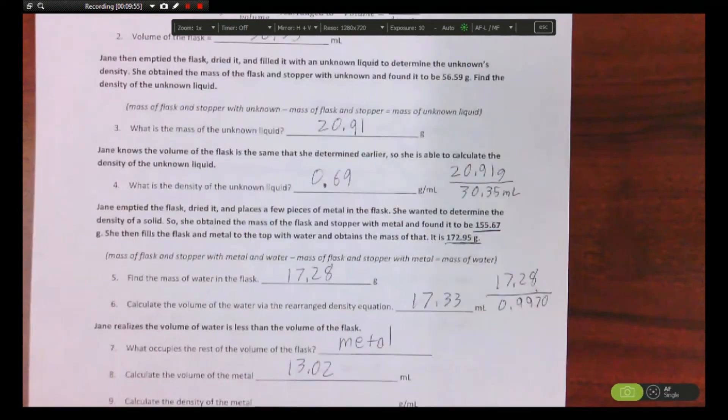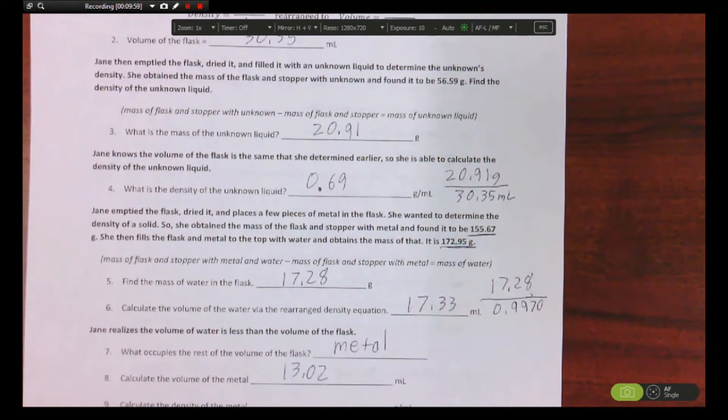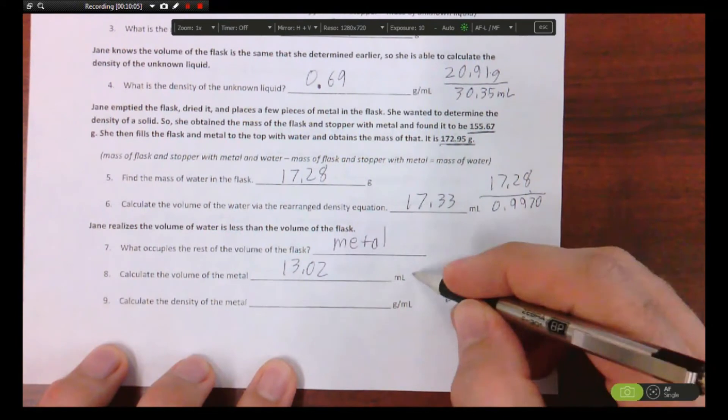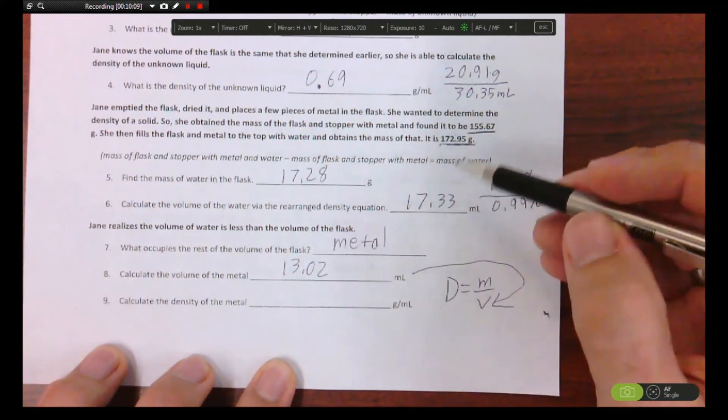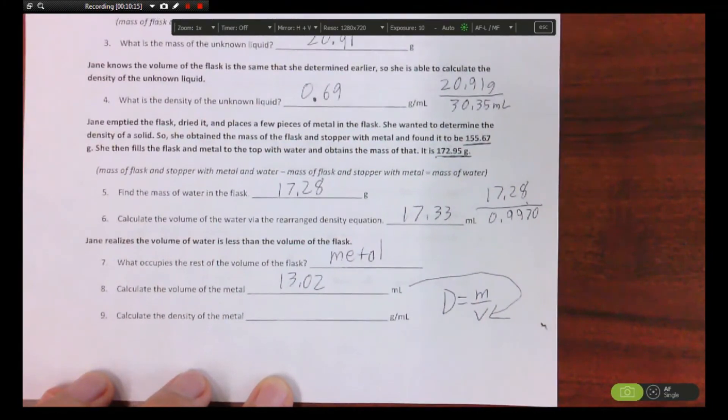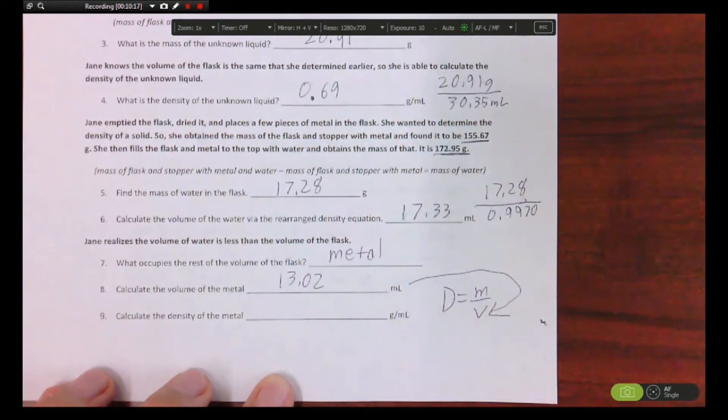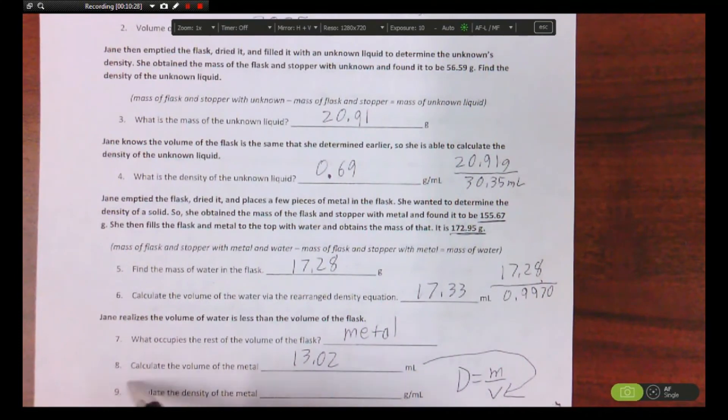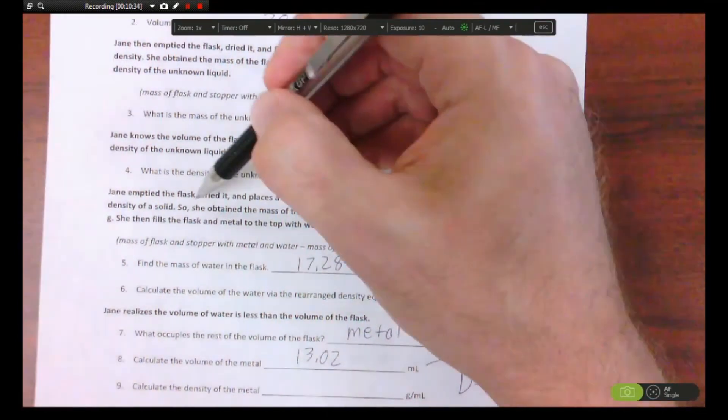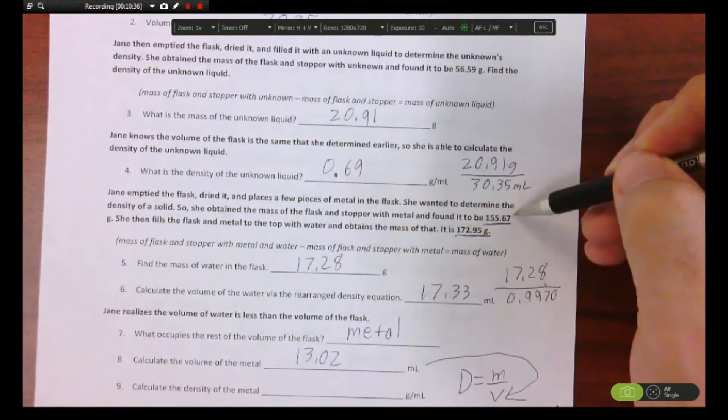All right, last but not least, let's do the density of the metal. Well, density of metal is mass over volume. So you just found the volume of the metal, the mass of the metal, where's that at? Really, you're going to do one of these. Okay, this is the hard part. They, y'all didn't do an intermediate step here to actually get the mass of the metal, but how would you find it? Well, you have the mass of the flask and stopper with the metal, that's right here, okay, 155.67.